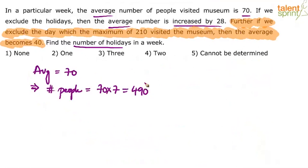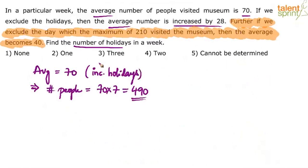The total number of people remains the same even if you exclude the holidays. The average will change because the number of days considered will change, but the total stays at 490. If we exclude the holidays, the new average is 70 + 28 = 98. So, there are 98 people visiting on average during non-holiday days.